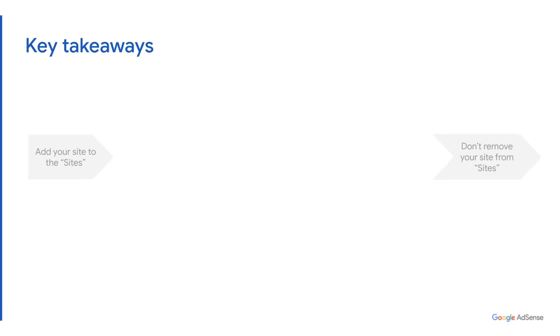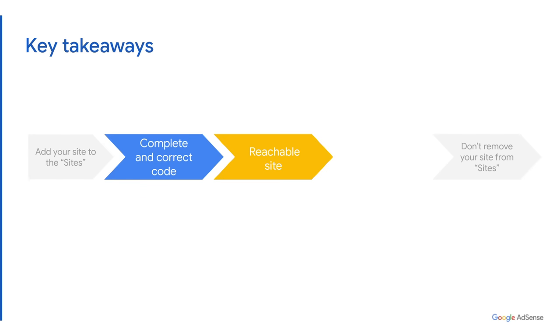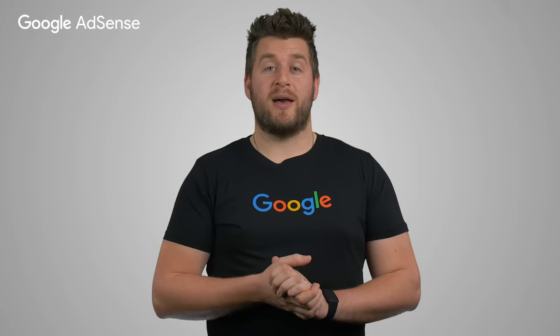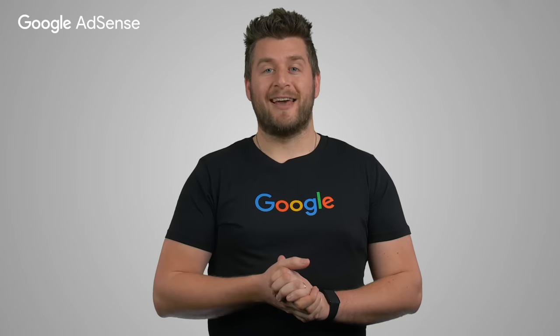To summarize, here are the most important points to get your account activated. One, copy the code exactly as it appears in your AdSense homepage. Two, make sure your site is reachable. And three, review our program policies. We hope this video helps you better understand how you can get your site approved. To learn more, you can visit the AdSense Help Center and AdSense website via the links in the description of this video. Make sure to subscribe to the Google AdSense channel for more best practices and how you can grow your site further. Thank you for watching and let us know in the comment section if you have any suggestions for new videos.